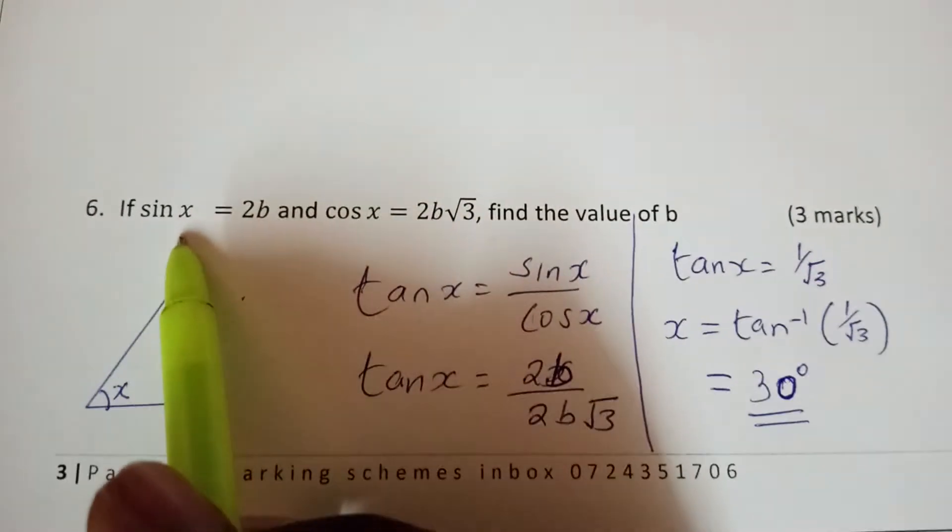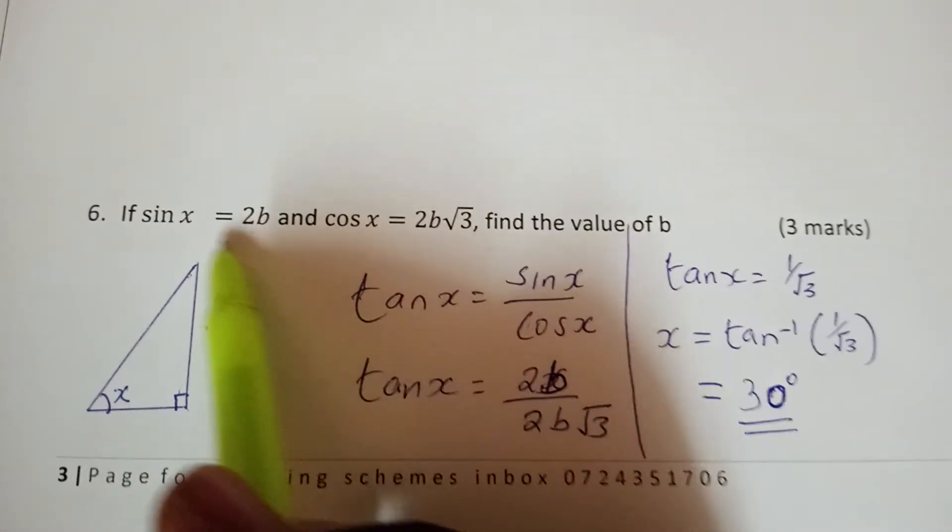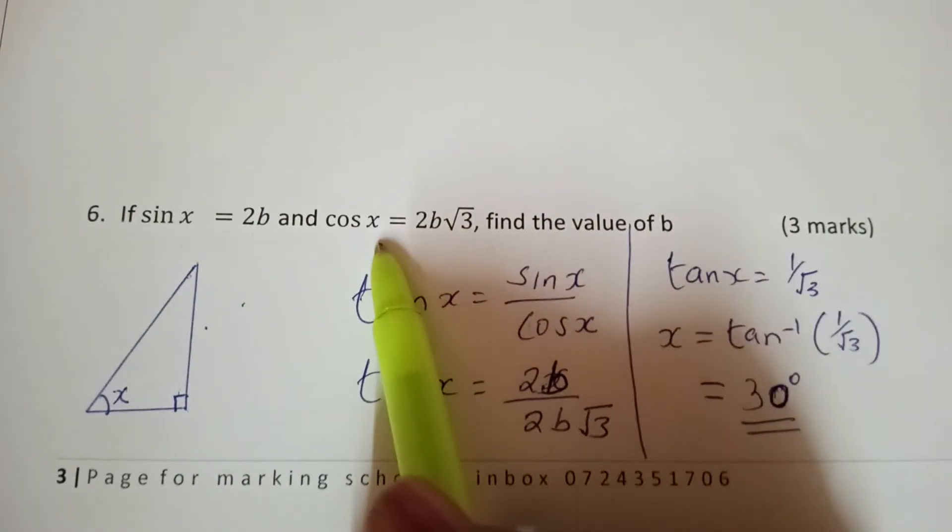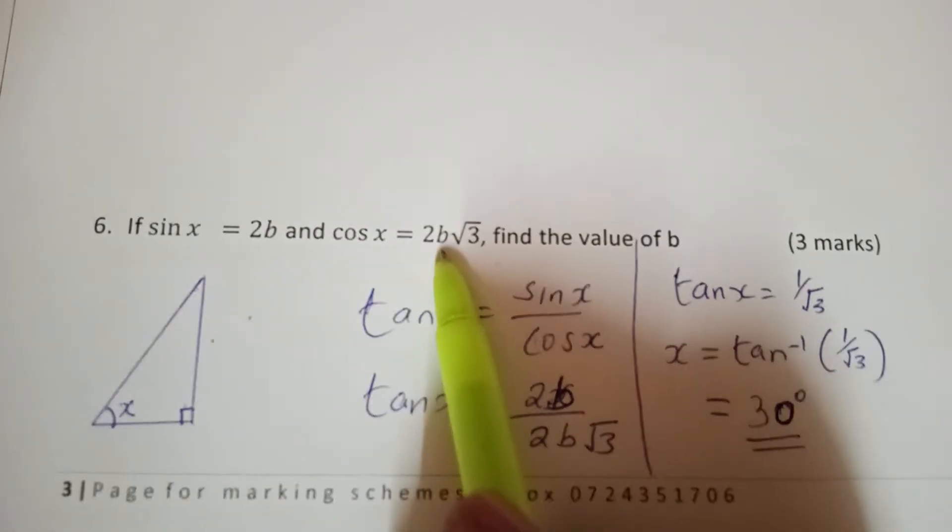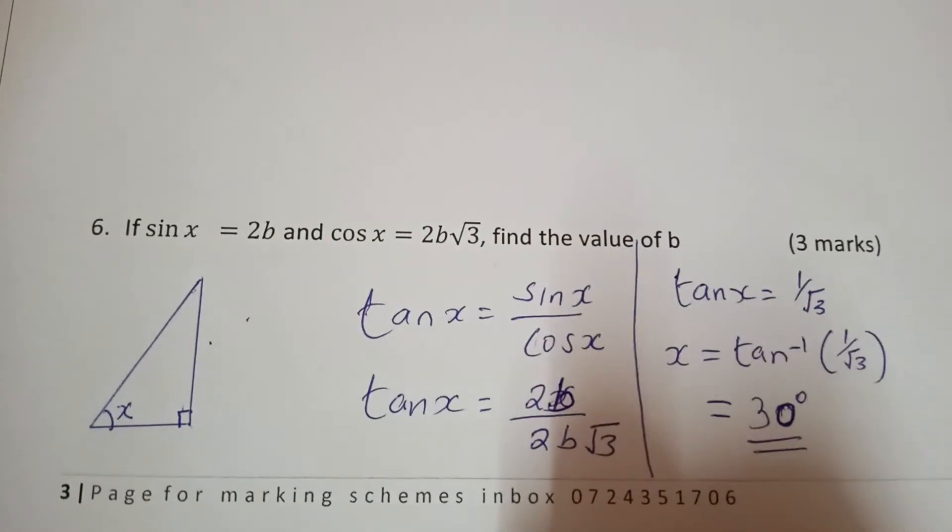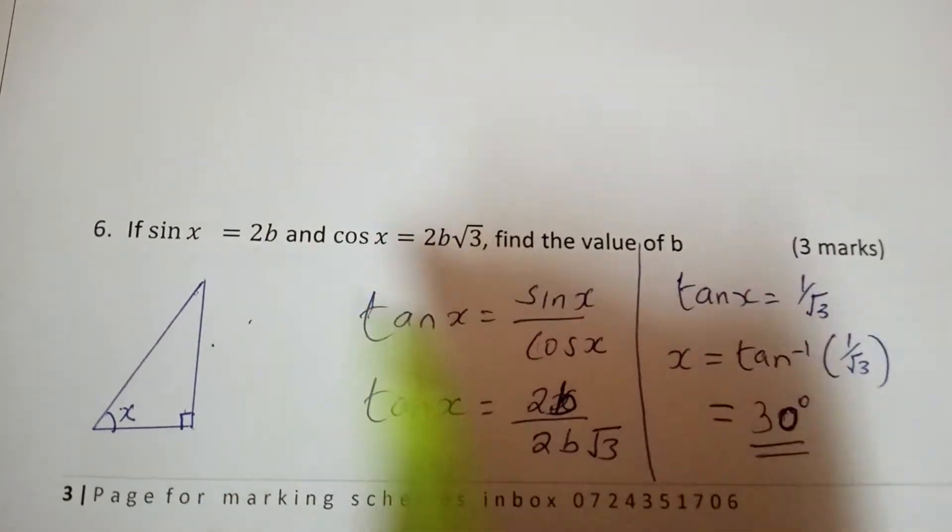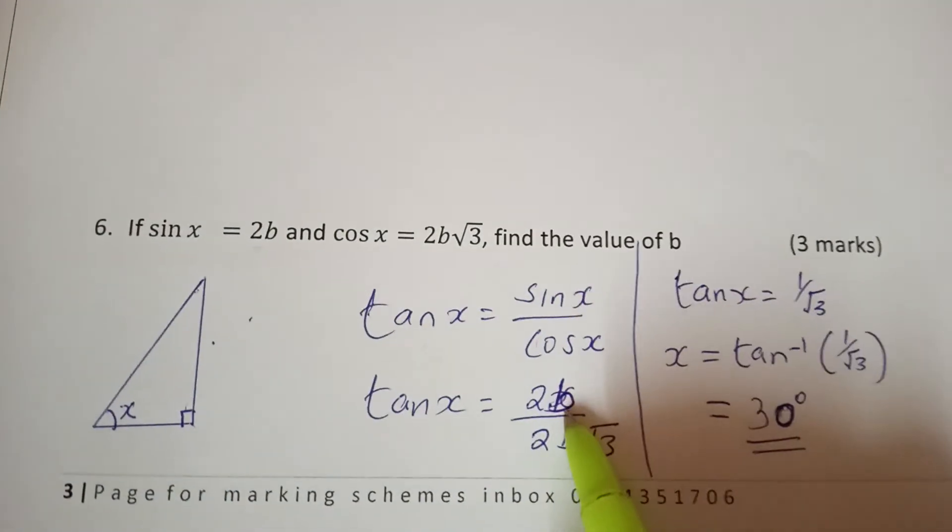You are given sine x to be 2b and cos x to be 2b root 3. So you just substitute. You take the value of sine x, you substitute, and you take the value of cos x, you substitute.